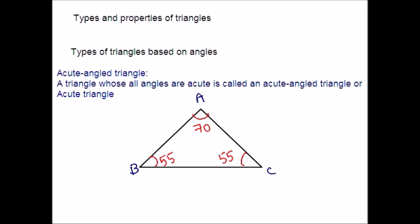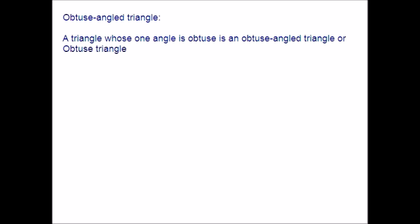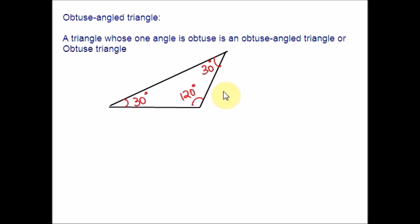The next type is obtuse angle triangle. Obtuse means the angle is greater than 90 degrees. A triangle whose one angle is obtuse is called an obtuse angle triangle. We cannot draw a triangle with all three angles obtuse, because if all three angles are greater than 90, their sum would exceed 180 degrees — which is the main property of a triangle. For example, the three angles are 30°, 30°, and 120°. The angle of 120° is greater than 90, making it an obtuse angle triangle.